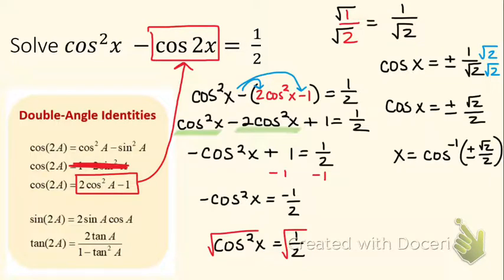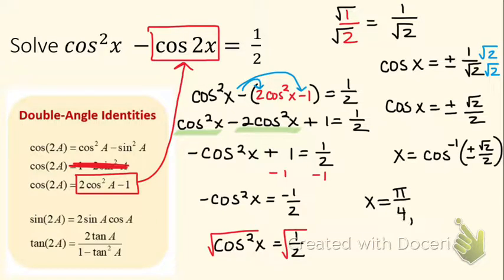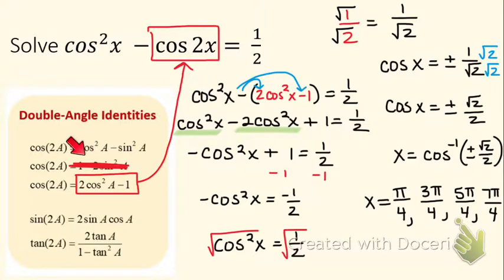Even though we used different identities, you should have four answers. The four angles that have a cosine of plus and minus root 2 over 2 are the same as those with a sine of plus and minus root 2 over 2. Go to your unit circle and find angles with cosine of positive and negative root 2 over 2 — those are π/4, 3π/4, 5π/4, and 7π/4. Regardless of which identity you use, these four are your final solutions.